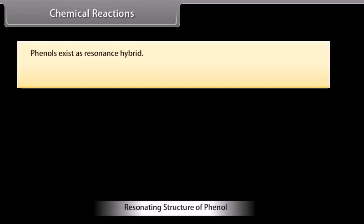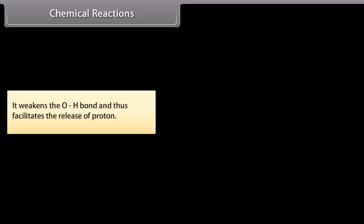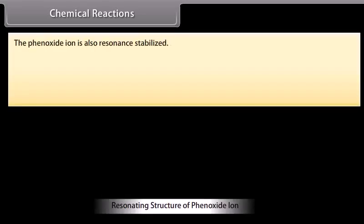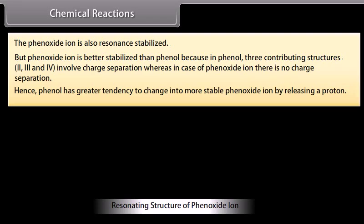Phenols exist as resonance hybrids. As a result of resonance, the oxygen atom acquires a partial positive charge. It weakens the OH bond and thus facilitates the release of a proton. The phenoxide ion is also resonance stabilized, but phenoxide ion is better stabilized than phenol. In phenol, 3 contributing structures involve charge separation, whereas in the case of phenoxide ion there is no charge separation. Hence phenol has greater tendency to change into more stable phenoxide ion by releasing a proton.